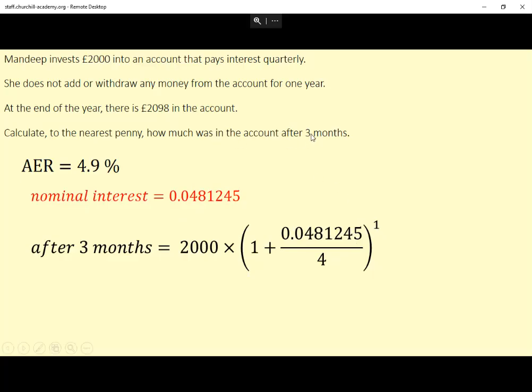We're asked to work it out after three months. Well, after three months, that's the end of the first quarter, so there'll only been one compounding period after three months. That's why this is a power of one.